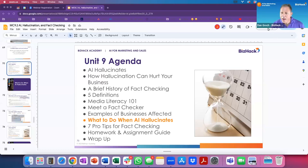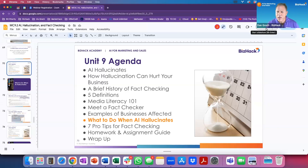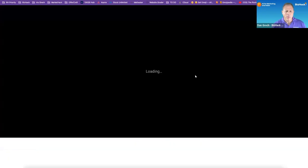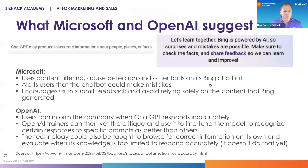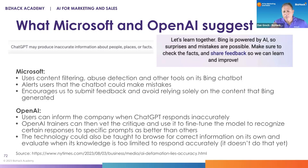We're going to talk about what to do when AI hallucinates, and then we'll move into some tips for how to approach this. The first thing is let's look at what Microsoft and OpenAI suggest. Microsoft Bing AI is powered on ChatGPT, and OpenAI is the owner of ChatGPT.